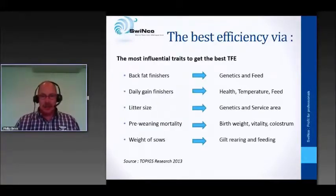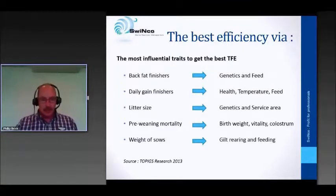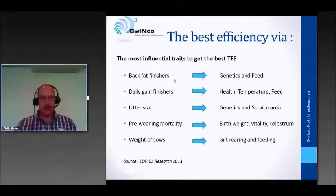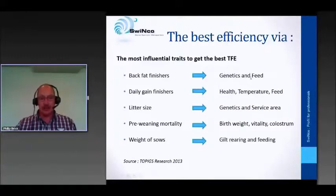How do we get the best efficiency? Looking at research that Topix conducted last year, we see that there are many traits that influence feed efficiency. Topix filtered the top five: back fat of finishers, daily gain of finishers, litter size, pre-wean mortality, and the weight of the sows. In the next slide I will discuss each item and give my opinion on how we could increase influence and improve every single trait.